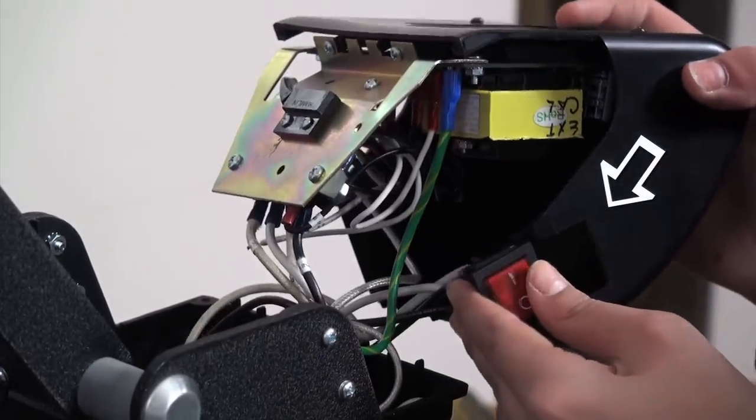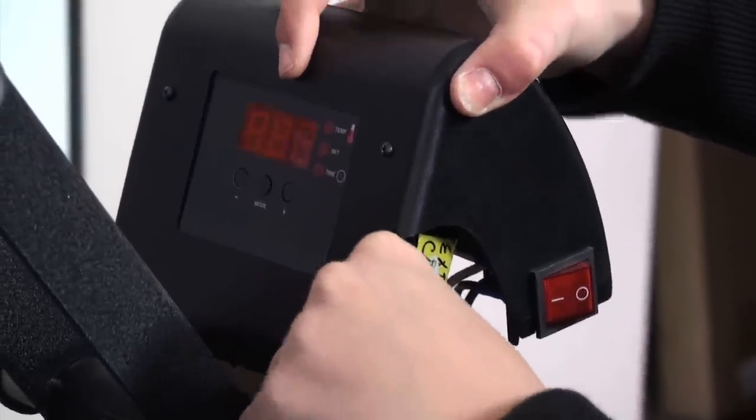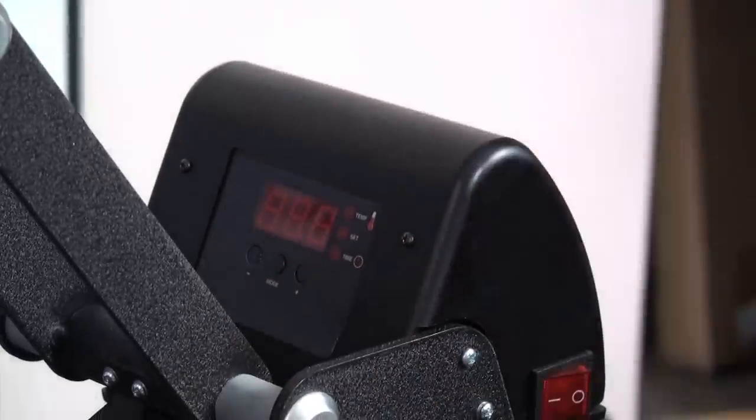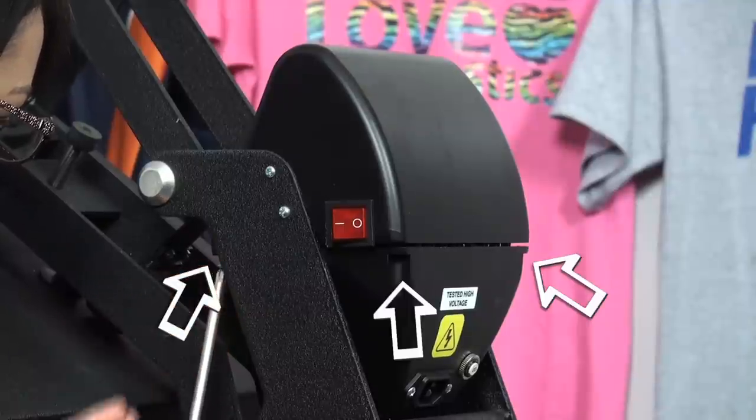Once you have transferred the four wires, place the switch back into the housing cover and replace the housing cover on the housing unit. Screw the housing cover onto the housing unit using the four screws you removed earlier.